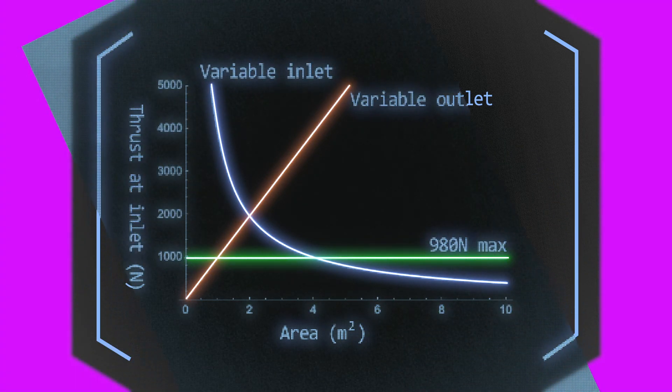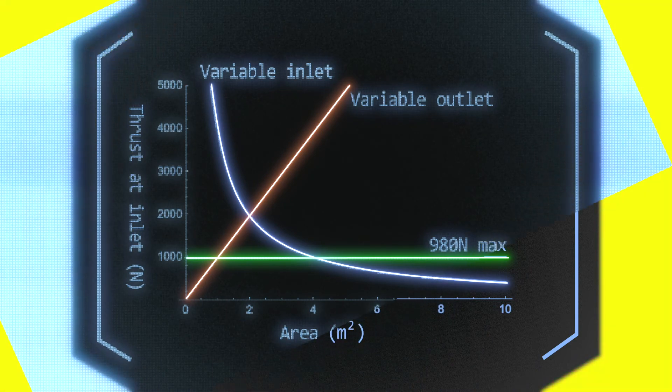For the graph with the variable outlet area, which is the orange line, good areas are below 1 square meter.